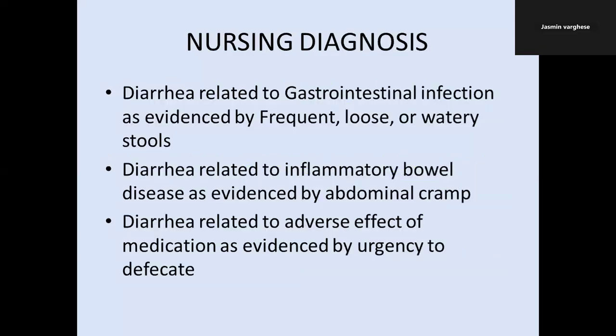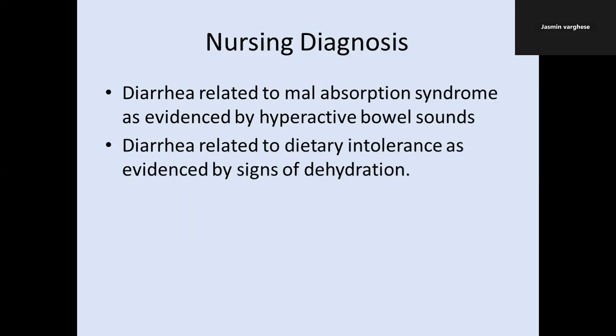Now we will see the nursing diagnosis based on the nursing diagnosis format. First: diarrhea related to gastrointestinal infection as evidenced by frequent loose or watery stools. Second: diarrhea related to inflammatory bowel disease as evidenced by abdominal cramp. Third: diarrhea related to adverse effect of medication as evidenced by urgency to defecate. Fourth: diarrhea related to malabsorption syndrome as evidenced by hyperactive bowel sounds. Fifth: diarrhea related to dietary intolerance as evidenced by signs of dehydration.